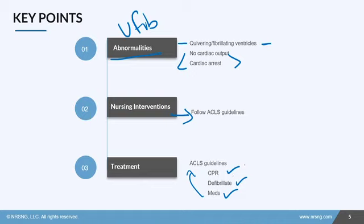You do CPR every two minutes until a rhythm check, and medications every three to five minutes. Ventricular fibrillation is not one of those rhythms where you wait to see if it's really happening — you do something about it right away.